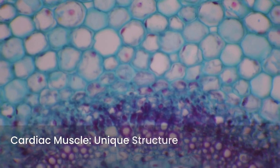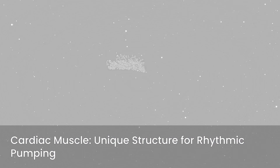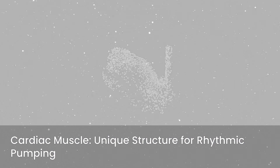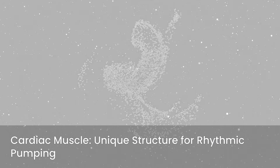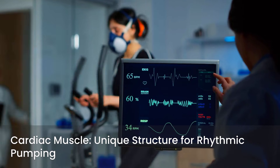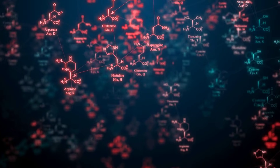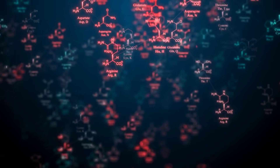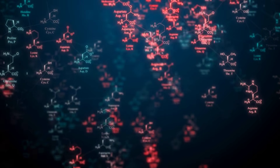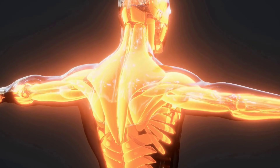Cardiac muscle is involuntary and also striated, but it's unique to the heart. It contains intercalated discs, which allow for rapid electrical communication between cells, ensuring synchronized contractions. This tissue is built for continuous rhythmic pumping. Your learning focus here should be on the key differences in structure, function, and contraction mechanisms for each muscle type — pay attention to striations, nuclei number and location, and control mechanisms.